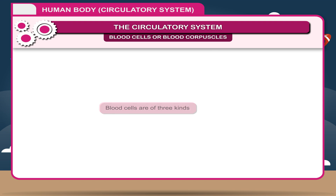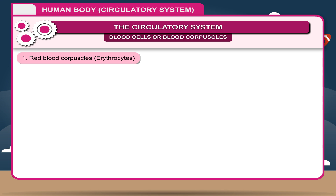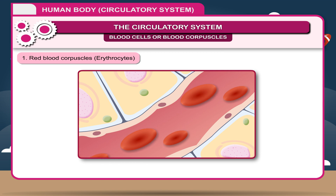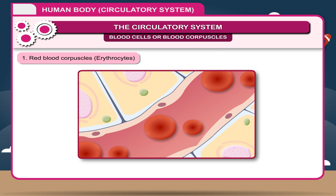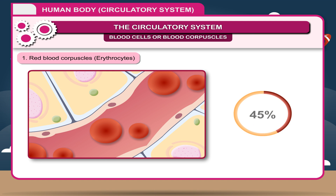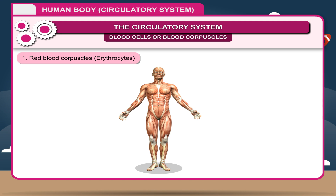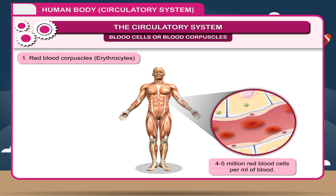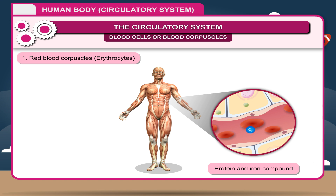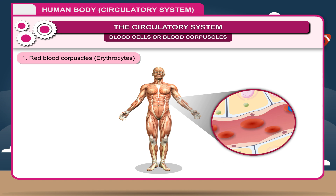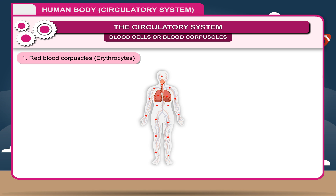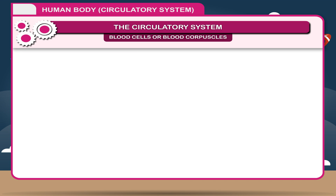Blood cells are of three kinds. Red blood cells, or erythrocytes (RBCs), are small-sized, biconcave discs without nuclei. RBCs make up almost 45% of the blood volume, and a healthy man contains about 4 to 5 million red blood cells per milliliter of blood. RBCs are composed mainly of a protein and iron compound called hemoglobin, which captures oxygen molecules as the blood moves through the lungs, giving the red color to the blood. Their primary function is to carry oxygen from the lungs to every cell in the body.